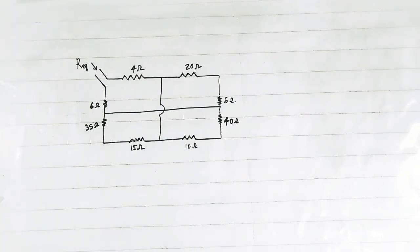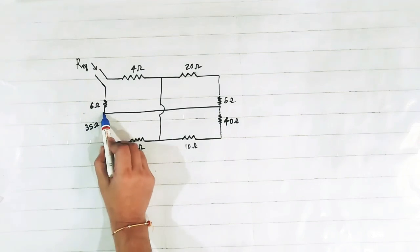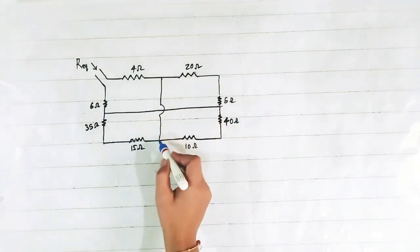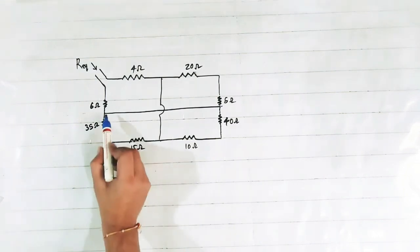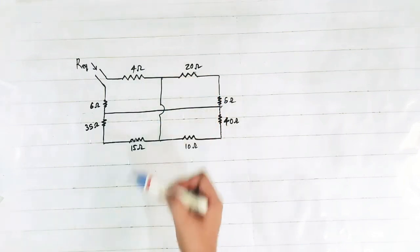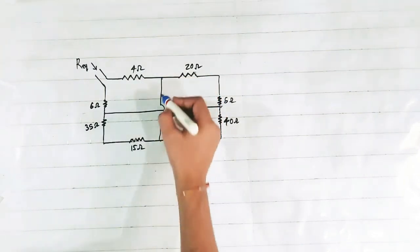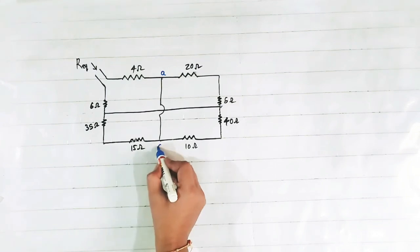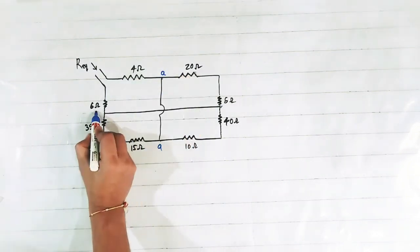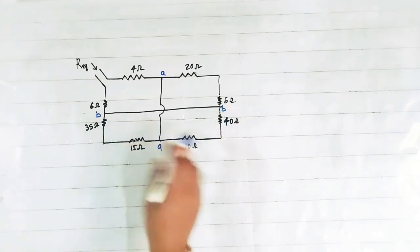Now see this question. Here in this question the circuit is given and we have to find the equivalent resistance. If we analyze this circuit, we see that these two points are directly connected and these two points are directly connected. It means the potential of these two points is the same. Suppose this is A and this is also A because they are both at the same potential, and we can treat these two points as a single point, i.e. B.